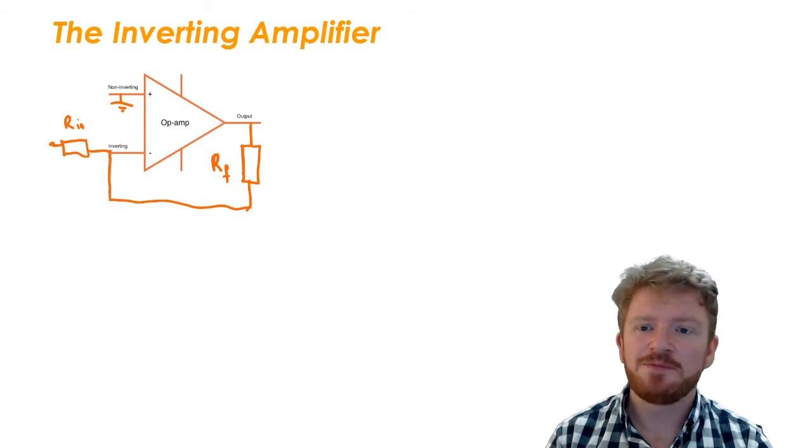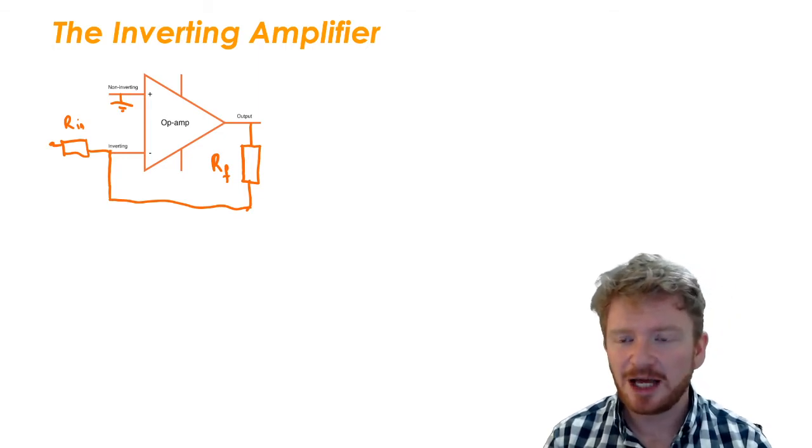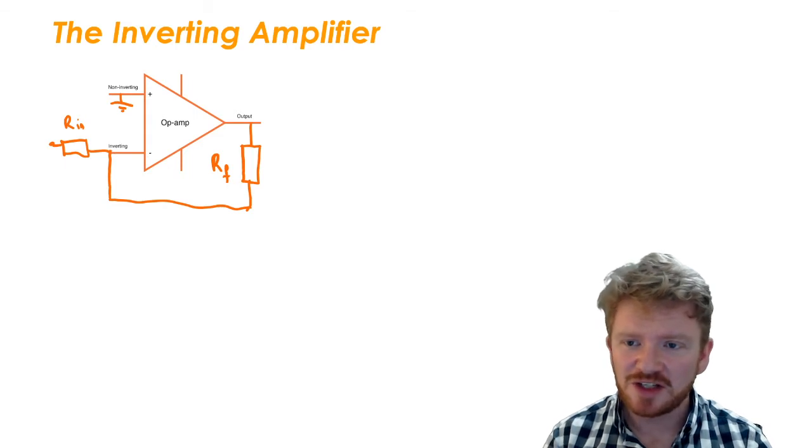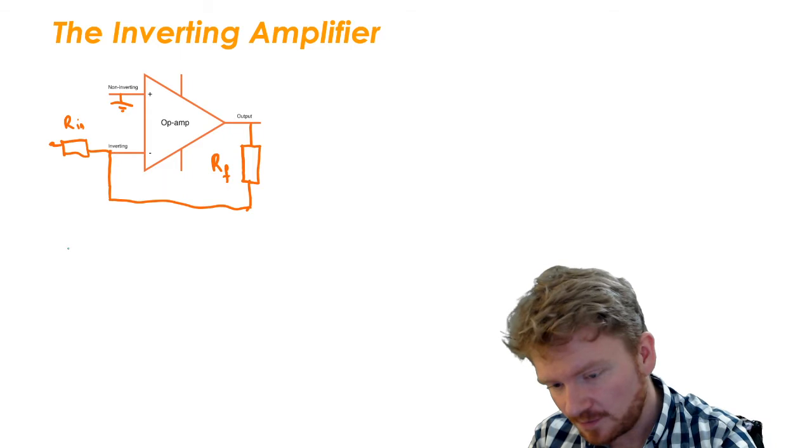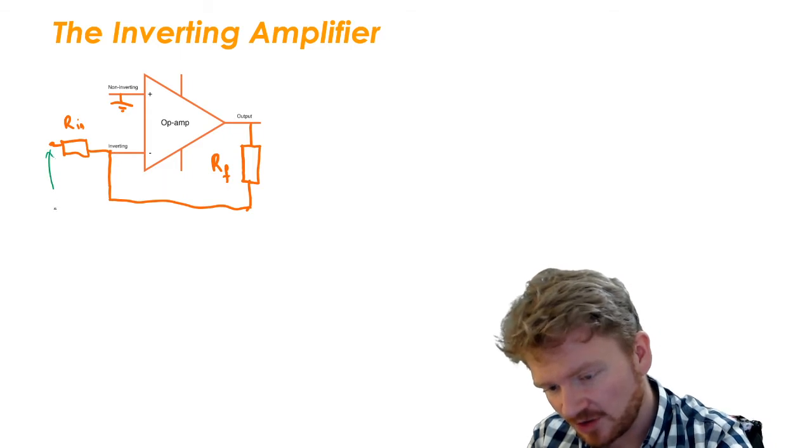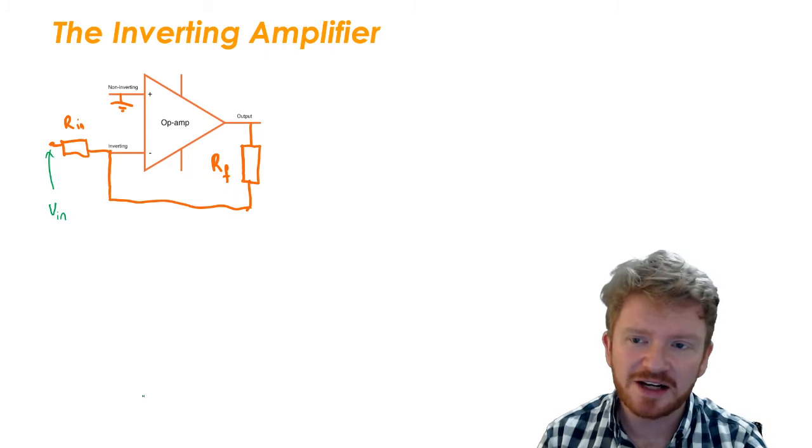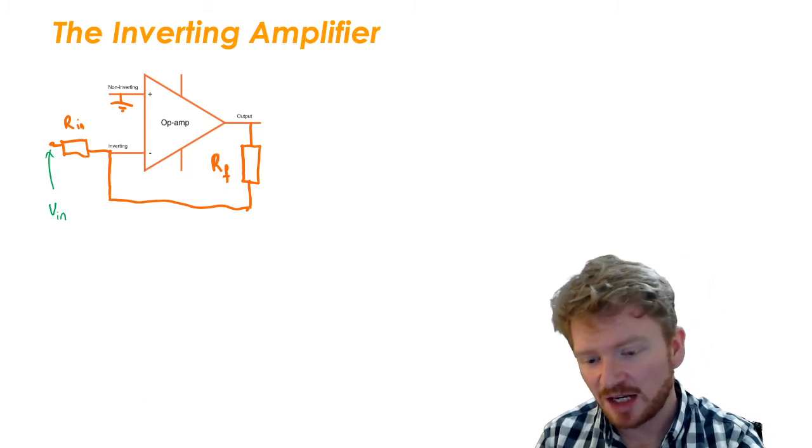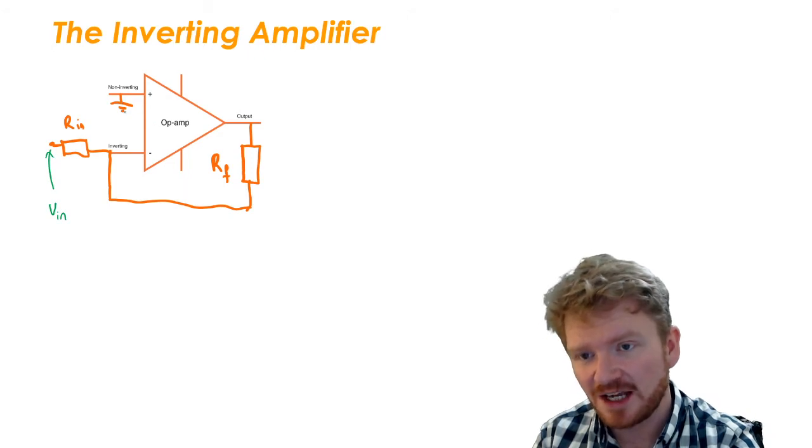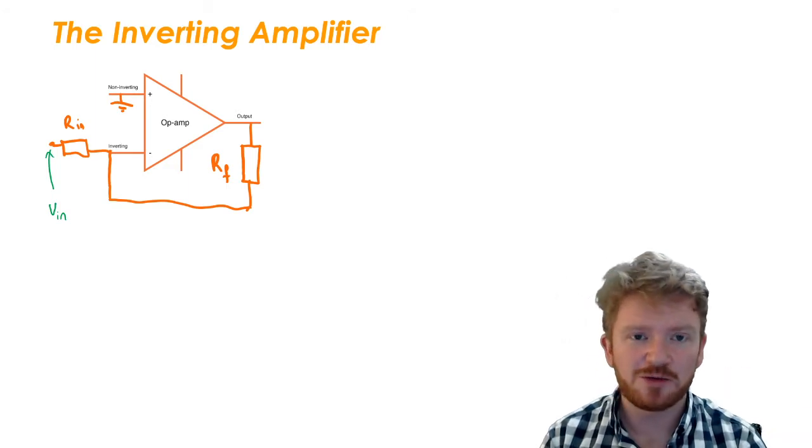Okay, so what I've got here is the basic layout of an inverting amplifier. You can see that I still have an input here which is V-in, but what I've done now is I've added some resistors to this device and I've also connected my non-inverting input to ground. So what effect is all this going to have on my circuit?